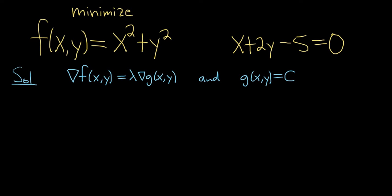Once we get x and y, we plug them back into our original function, and that should be the minimum in this case. So all we have to do is compute the gradients. In this problem here, this is our g(x,y), and our c is 0 in this case.